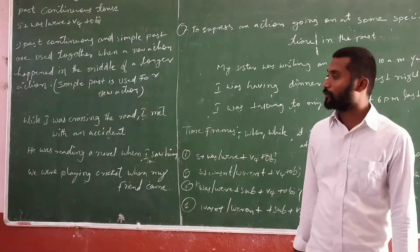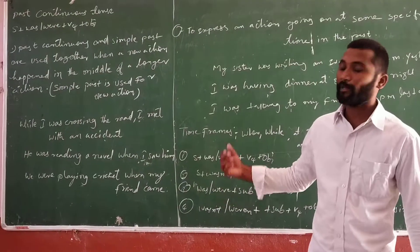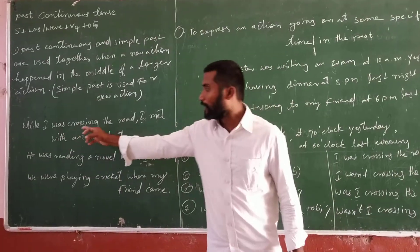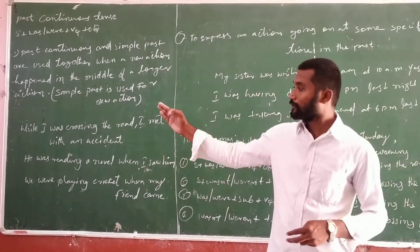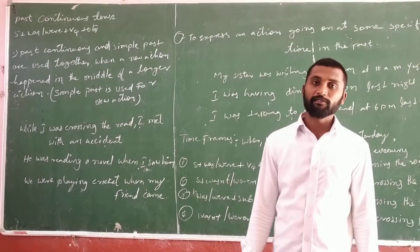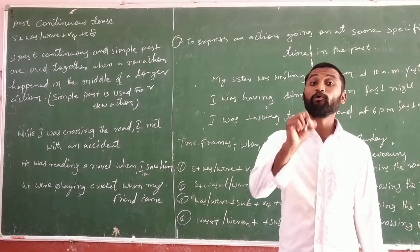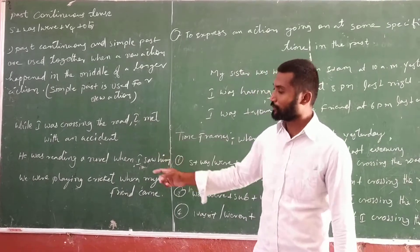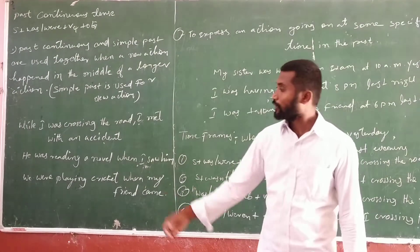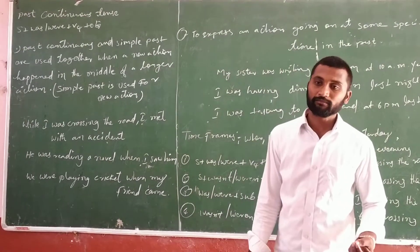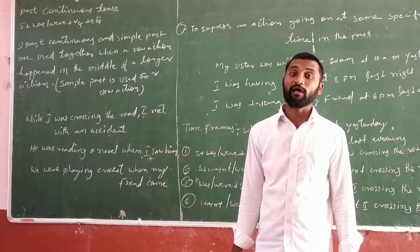For example: 'While I was crossing the road, I met with an accident.' 'I met with an accident' is simple past tense — subject 'I', verb 'met', remaining is object. To combine these two sentences we use 'while' as a connecting word, a linker or conjunction word.